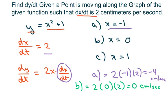And then the last one, part C, we get 2 times 1 times 2, which equals 4 centimeters per second.